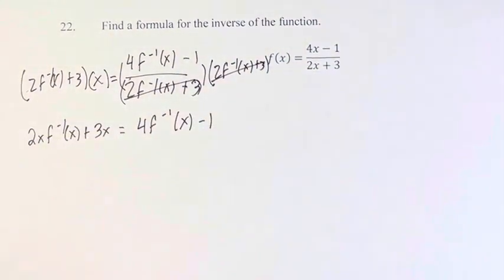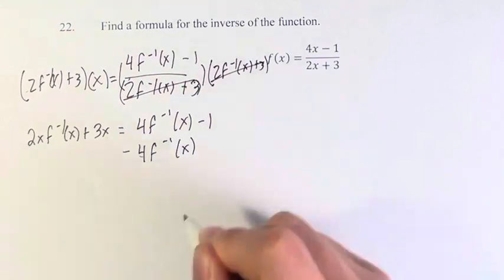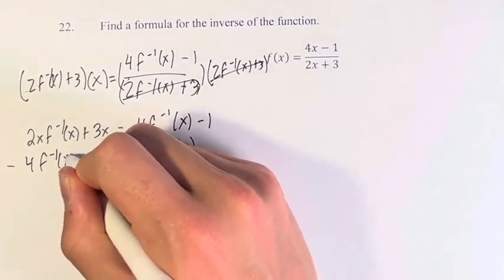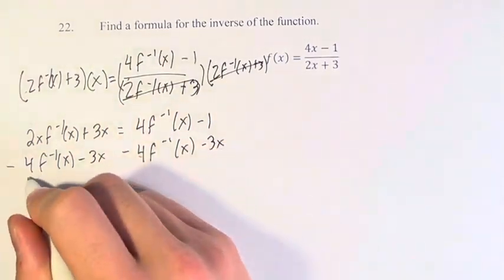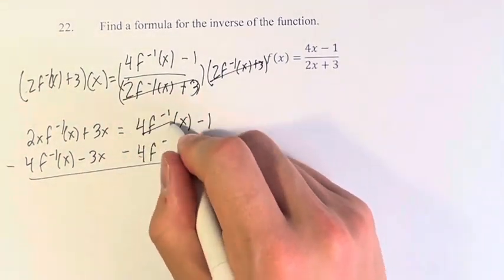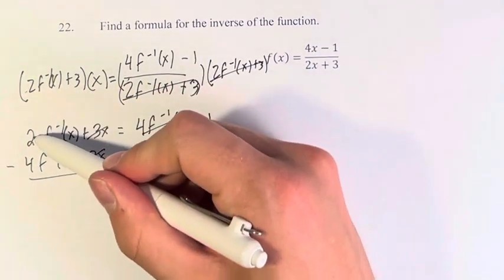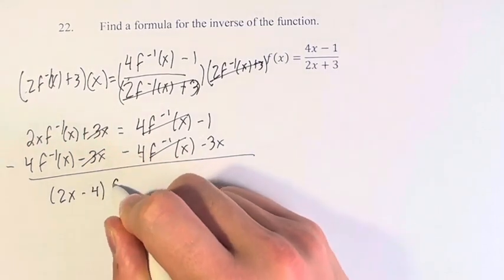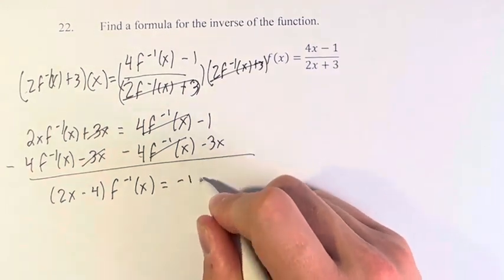We want to get the inverses all on the same side. So we subtract 4 times it from both sides, and we can subtract 3x to bring that over to the other side as well. So, these cancel, these cancel, and we're left with 2x minus 4 times the inverse of f is equal to negative 1 minus 3x.